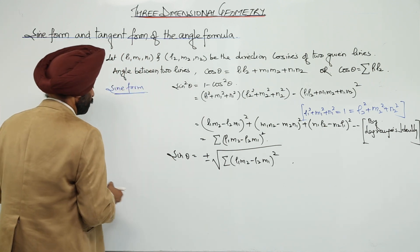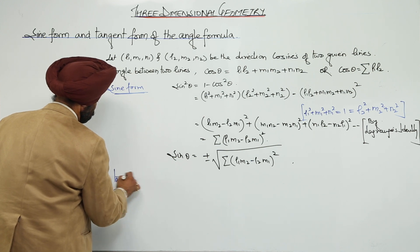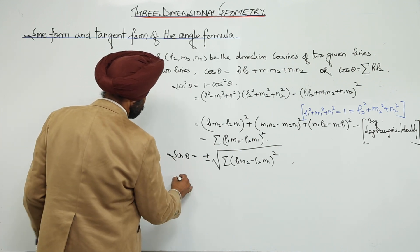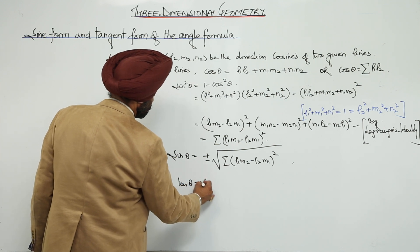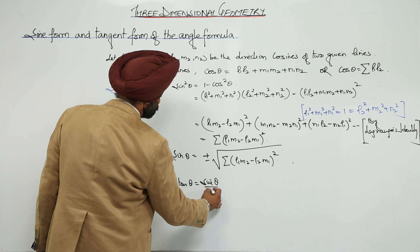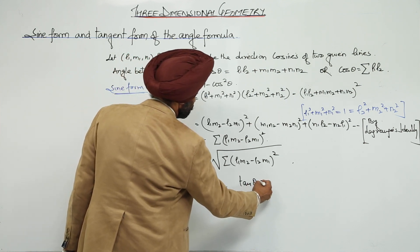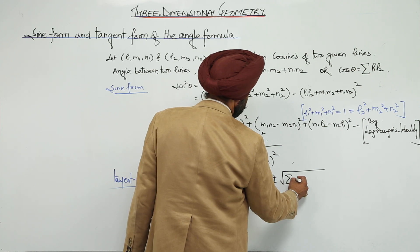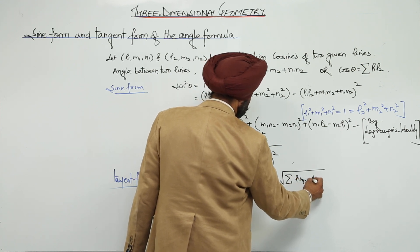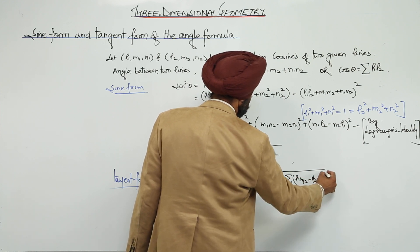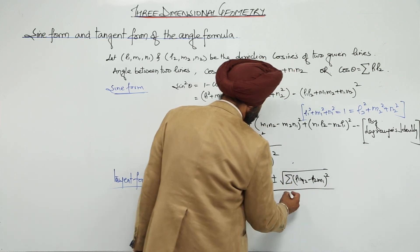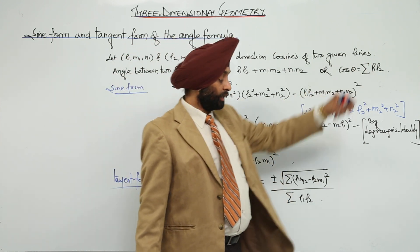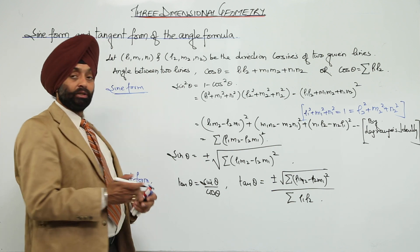Now for the tangent form: tan θ = sin θ / cos θ. Therefore, tan θ = ±√(Σ(L1M2 − L2M1)²) divided by Σ L1L2. So one formula is in the sin form and another is in the tangent form.